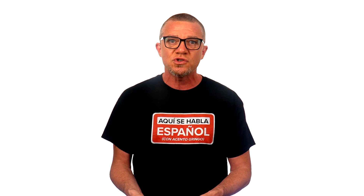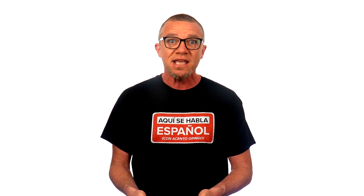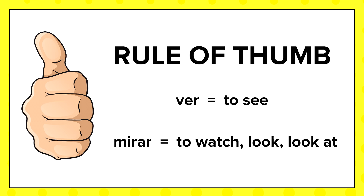Now, before we get to the controversy and confusion, I must say what they tell us about ver and mirar is basically true. Most of the time, the Spanish verb ver does mean 'to see,' and the Spanish verb mirar does mean 'to watch,' 'to look,' or 'to look at.' But that's just most of the time. In reality, it's better to think of that as a rule of thumb, not a rule.